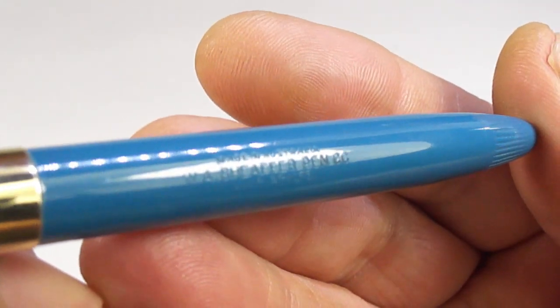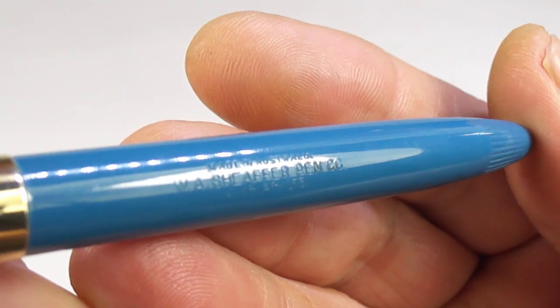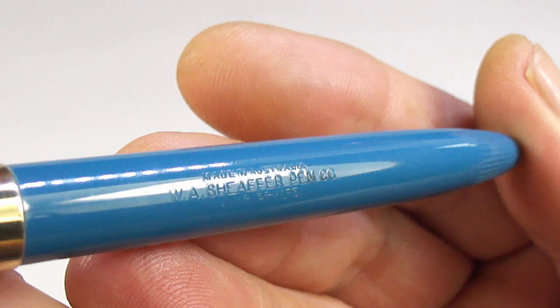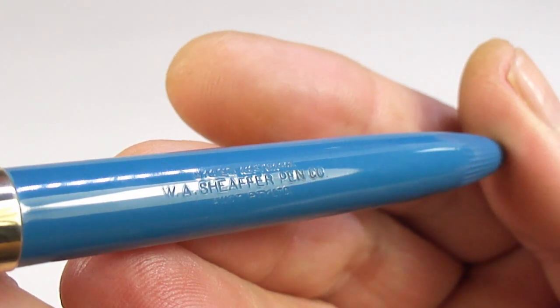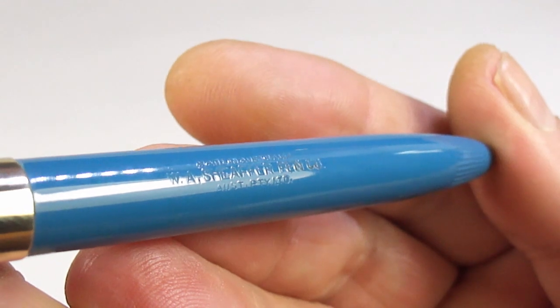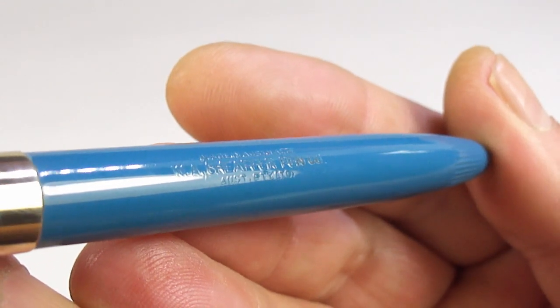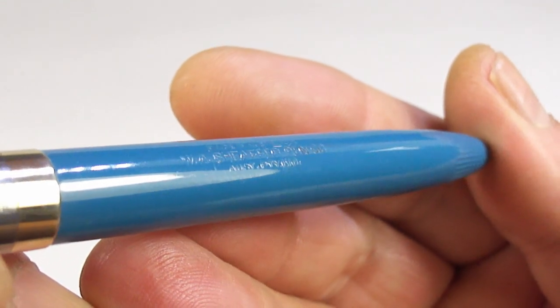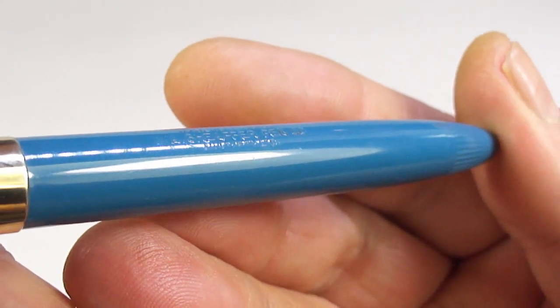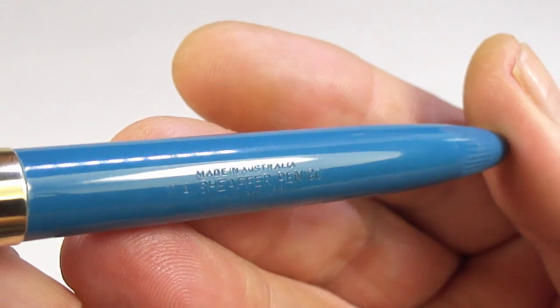So, if we show you the barrel imprint there, you'll see it says, it's made in Australia, W.A. Schaefer Pen Company. And then to the bottom, AUST PTY Limited. As you can see, a lovely clear imprint.